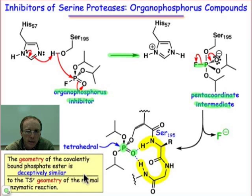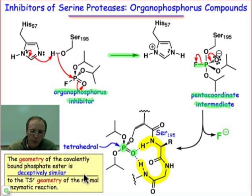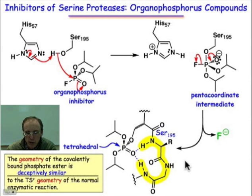And so it's deceiving the enzyme into thinking it's stabilizing this structure — it's so good at stabilizing this reactive tetrahedral intermediate — but in fact in this case it's not reactive at all. So that's the mechanism of irreversible inhibition by the nerve gas sarin.